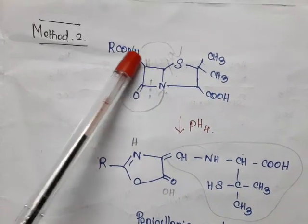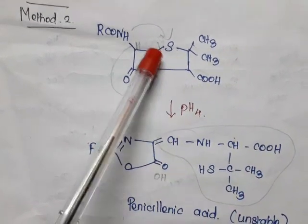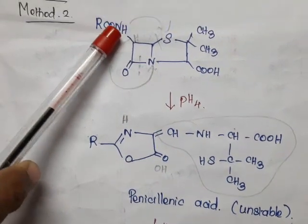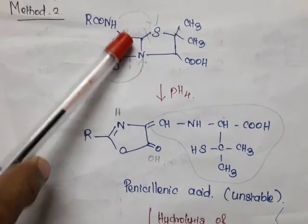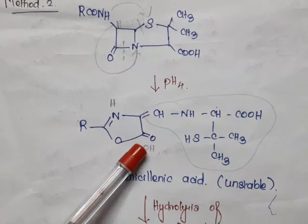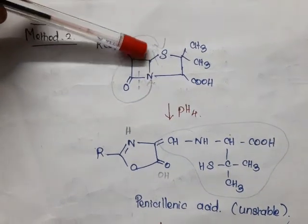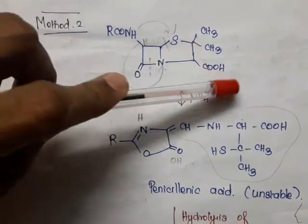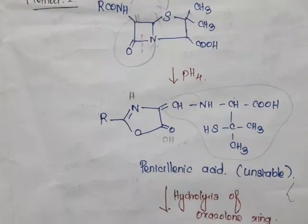Hydrogen present on the nitrogen is moved to sulfur. Hydrogen present on the carbon is moved to nitrogen, and there is cleavage between carbon-sulfur and carbon-nitrogen. So we get a ring: RCON (H not present since H moved to sulfur), then C with a double bond. The resulting product has CH connected to NH, then CH-COOH, and that carbon has two CH3 groups and SH attached. This is called penicillinic acid, and it is an unstable compound.